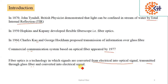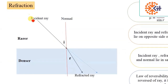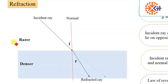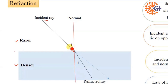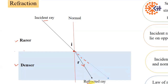Before understanding total internal reflection, we must understand the phenomenon of refraction. In this figure we have two media, rarer and denser medium, separated by a boundary. If a ray of light is incident on a denser medium, it changes its path and follows a refracted ray. The angle made by the incident ray with the normal is called the angle of incidence, and the angle made by the refracted ray with the normal is called the angle of refraction, represented by r.